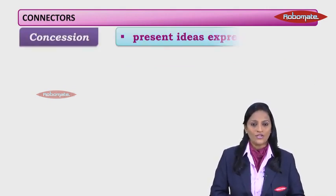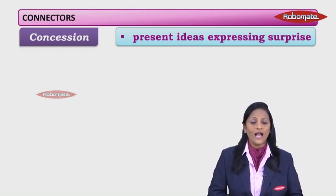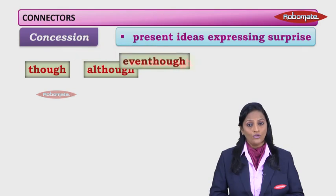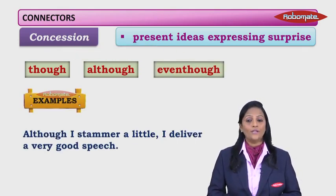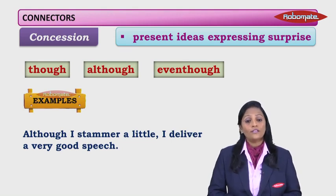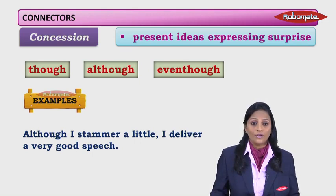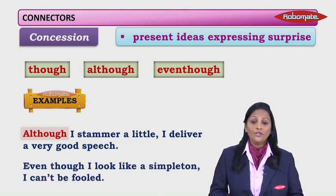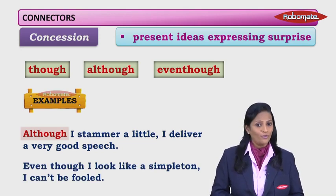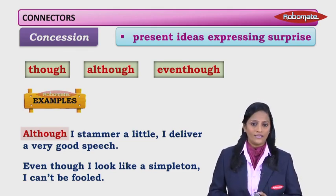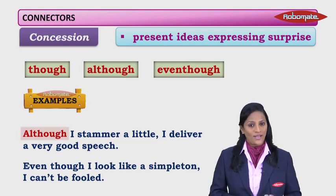Next: concession connectors. Concession is when there is an element of surprise — presenting ideas that express surprise. The types are though, although, and even though. For example: Although I stammer a little, I deliver a very good speech — quite surprising. A person who stammers may not be expected to give a good speech, but he does. Another example: Even though I look like a simpleton, I can't be fooled. A simpleton is naive and vulnerable, so it's surprising they can't be fooled. Therefore, we use even though.